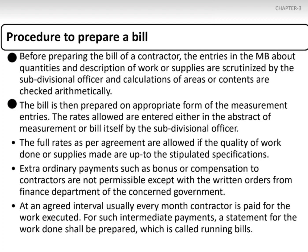The rates allowed are entered either in the abstract of the measurement or in the bill itself by the subdivision official. Full rates as per the agreement are allowed for the work done or supplies made to the stipulated specifications. Extraordinary payments such as bonus or compensation to contractors are not permissible without written orders from the finance department. At an agreed interval, usually every month, the contractor is paid for the work executed.